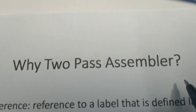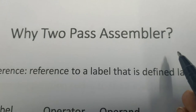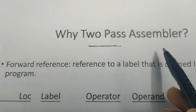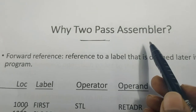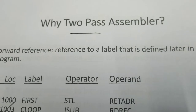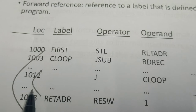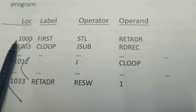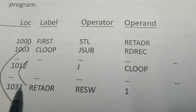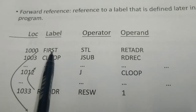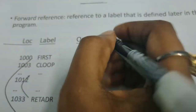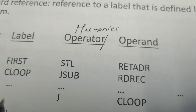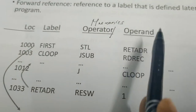Now let us see why we need a two-pass assembler to translate assembly level language into machine instructions. Two-pass means the assembler has to scan the program two times. An assembly level language program has three columns: the first column is the label, the second column is the operator or mnemonics, and the last column is the operand. The location counter holds the address of every instruction and label.